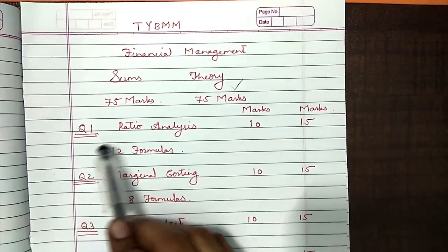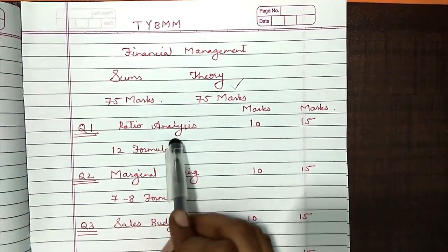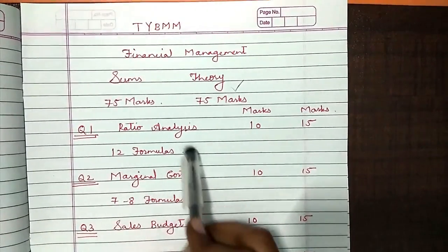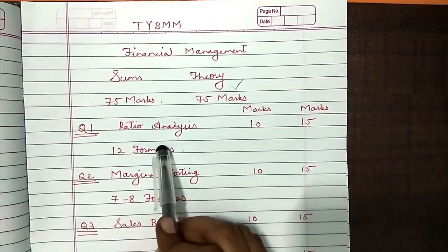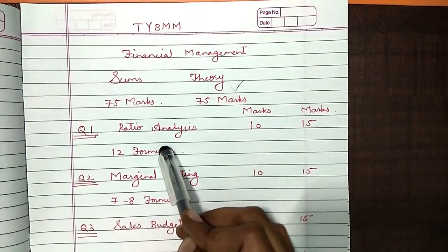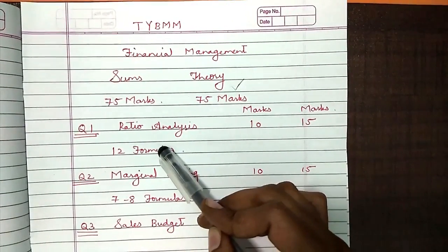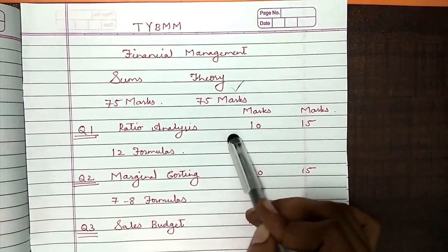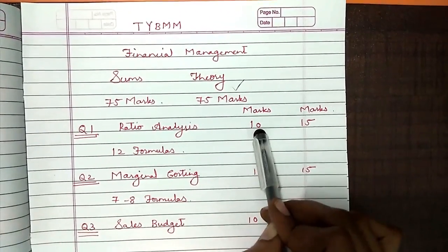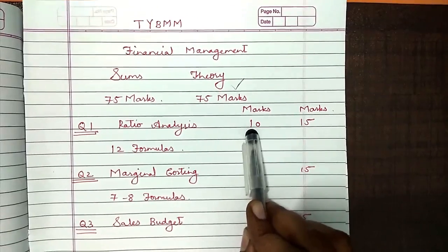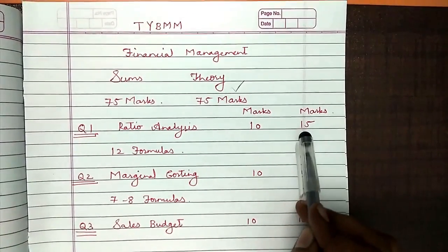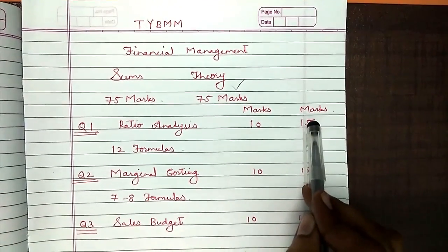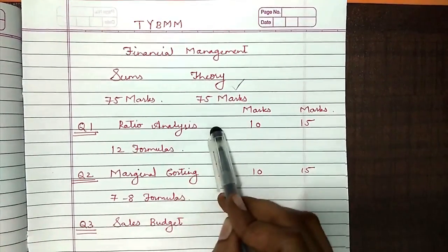Always in question number 1, there will be one question based on the chapter ratio analysis. This chapter has only 12 formulas. In an exam, they will ask you for 7 to 8 formulas. If you write down all 7 to 8 formulas, you are going to get a minimum 8 marks. With simple plus and minus, minimum you get 10 marks, and studying from my lectures, you will definitely score 15 out of 15 marks with this chapter.